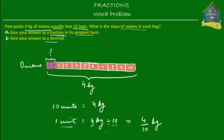Let's simplify this. Let's try to divide the numerator as well as the denominator by 2. If we divide 4 by 2 we get 2, and 10 by 2 we get 5. Can we divide this further? No. So the fraction 4 upon 10 kilograms is actually equal to 2 fifths kilogram.